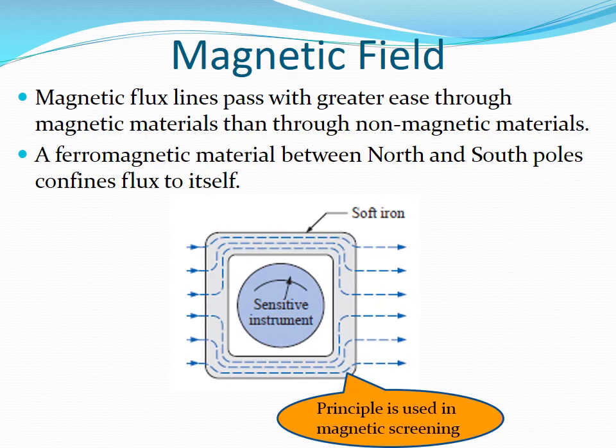This principle is exploited in magnetic screening. There are some pieces of equipment that are adversely affected by magnetic flux lines, so there is a need to place these pieces of equipment in an environment that is free of magnetic flux lines. To achieve this, we use a casing made from a magnetic material. This casing is going to confine any flux to itself and consequently produce a flux-free environment inside the casing. This is known as magnetic screening.